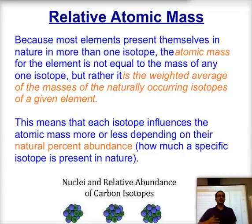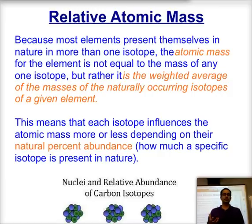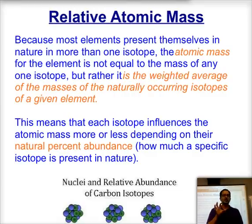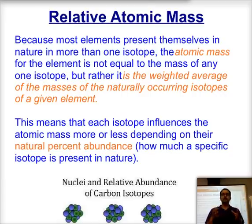Now we'll move to calculating relative atomic masses. Because most elements in nature are present as a mixture of isotopes, the atomic mass shown on the periodic table is not the mass of any single isotope. Instead, it is the weighted average of all the naturally occurring isotopes for that element — meaning how much of each isotope is present is taken into consideration.